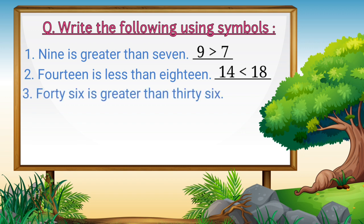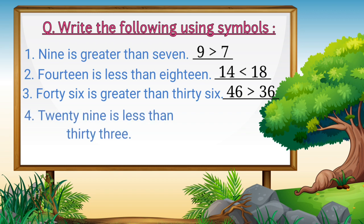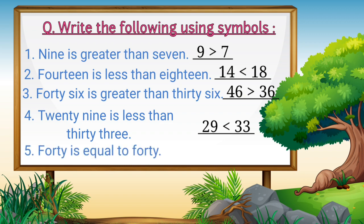Next, we have 46 is greater than 36. Which means Mr. Coco's mouth will open towards the greater number, that is number 46, and the closed part will face towards number 36. Next example, we have 29 is less than 33. 29 is less, which means the closed part will face towards number 29, and the open mouth will face towards number 33. In the last example, we have 40 is equal to 40. 40 is equal to 40 means same to same number, so we will use the symbol equals to. Therefore, 40 is equal to 40.